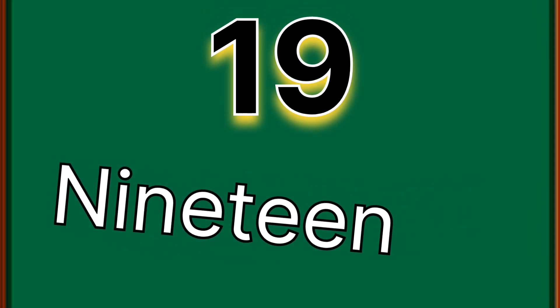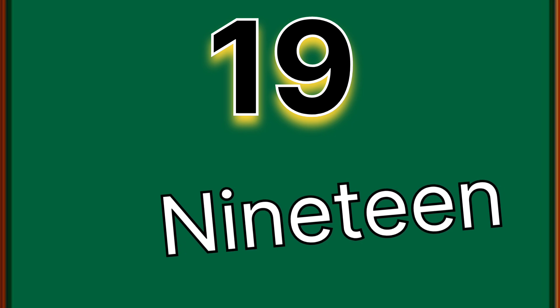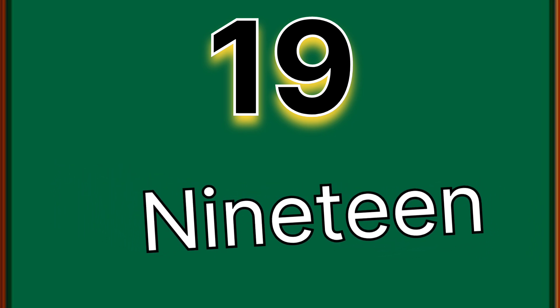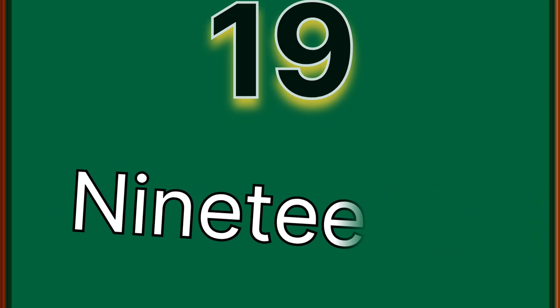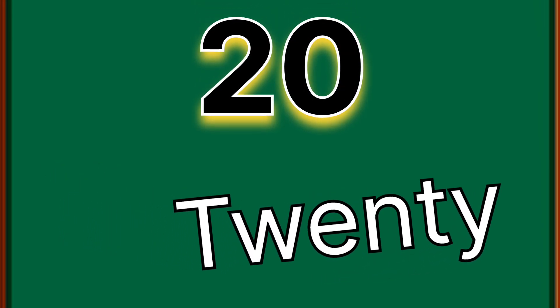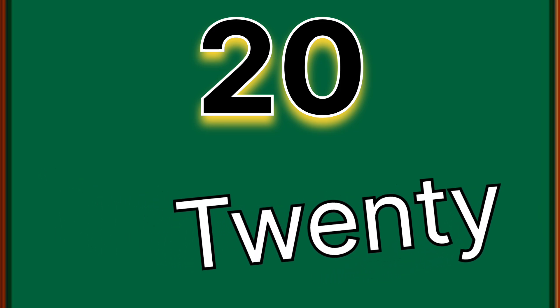Nineteen — one, nine — 19. Repeat: one, nine — nineteen. Twenty — two, zero — 20. Repeat: two, zero — twenty.